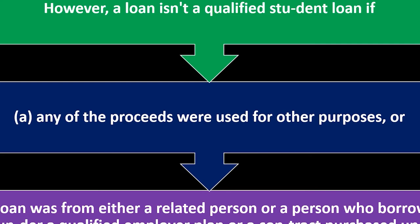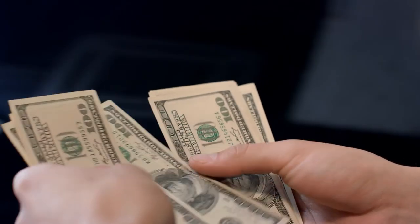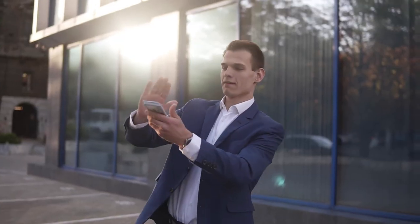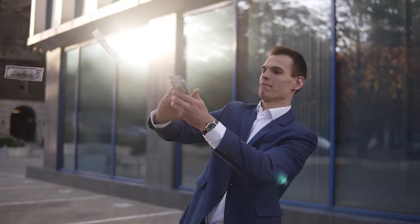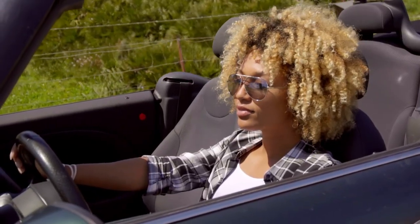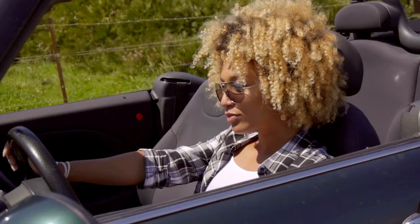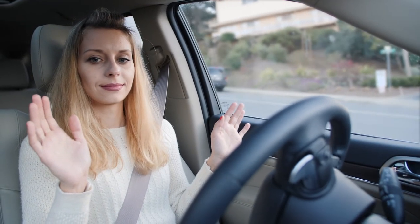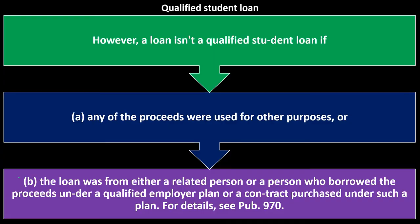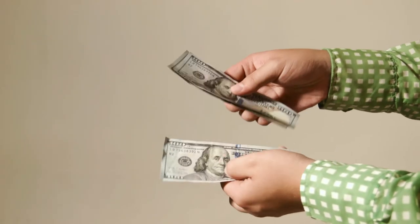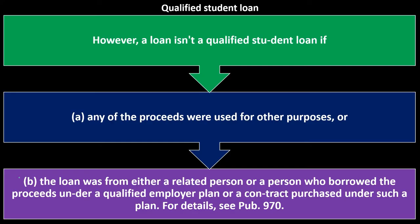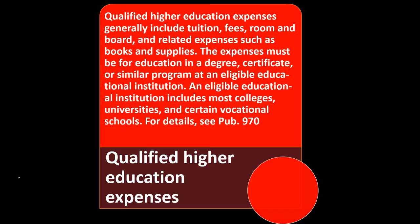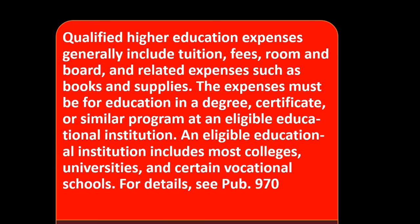A loan is not a qualified student loan if: (a) any of the proceeds were used for other purposes — for example, if you used the money to buy a fancy car rather than for school expenses, that portion doesn't qualify; or (b) the loan was from a related person or was borrowed under a qualified employer plan. See Publication 970 for details.